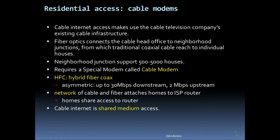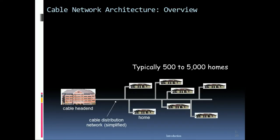HFC stands for Hybrid Fiber Coax. It is asymmetric — up to 30 Mbps downstream and 2 Mbps upstream. A network of cable and fiber attaches homes to the ISP router. Homes share access to the router, making cable internet a shared medium. This is the overview of cable network architecture.